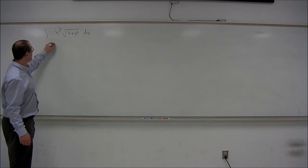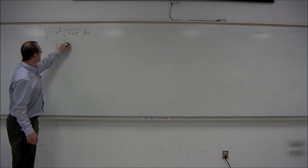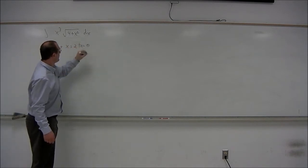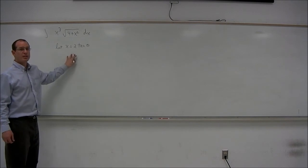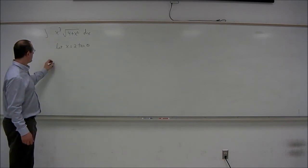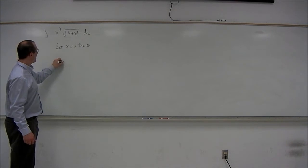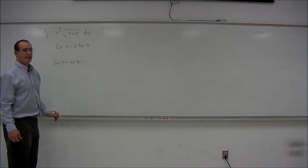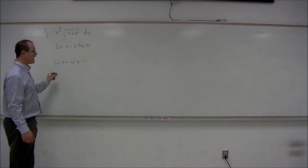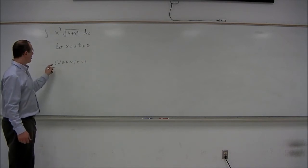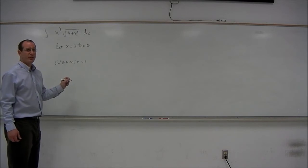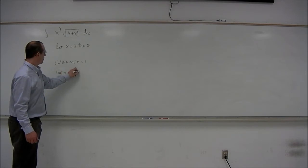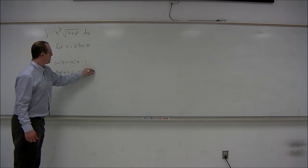The trigonometric substitution is going to be: let x equal 2 times the tangent of theta. Now where does this come from? If we look at the equation sine squared theta plus cosine squared theta equals 1, and divide this through by cosine squared, we get another, maybe slightly less familiar, Pythagorean identity: tangent squared theta plus 1 is equal to secant squared theta.